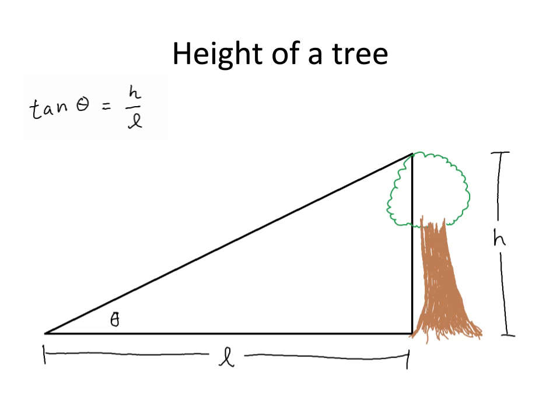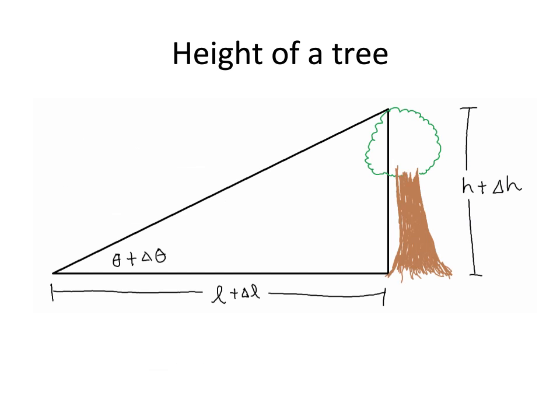This calculation is written here. Tangent of theta is equal to height over l. If we rearrange the given equation, then we can rewrite it in terms of h. l tan theta is equal to h. But we're engineers, so all of our terms have delta terms to them. Thus, theta is actually theta plus delta theta, l is l plus delta l, and h is h plus delta h.